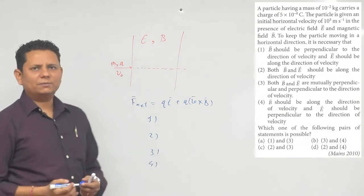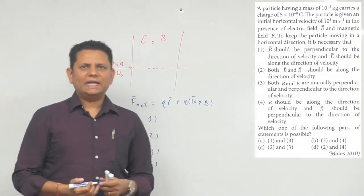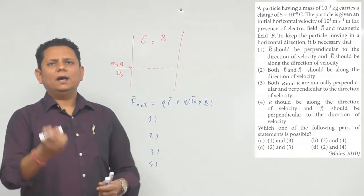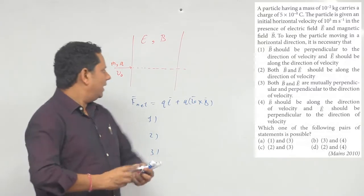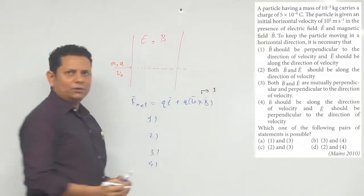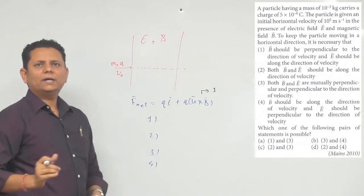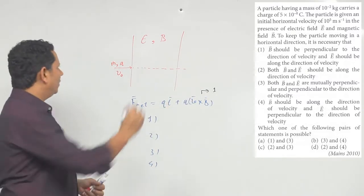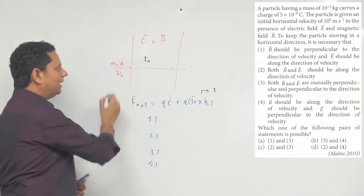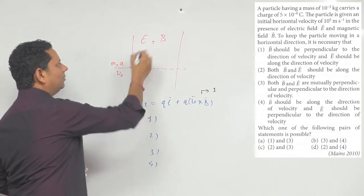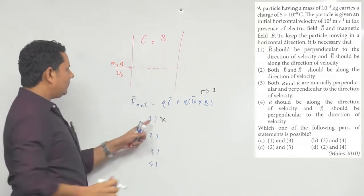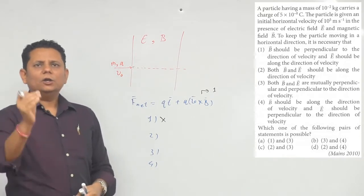पहला statement कहता है: B should be perpendicular to the direction of velocity and E should be along the direction of velocity। अगर B, velocity के perpendicular है तो sin θ = 1 होगा। और E, velocity के along है। इस case में magnetic force particle को rotate कर देगा — straight horizontal line में motion नहीं होगा। तो Option 1 possible नहीं है।